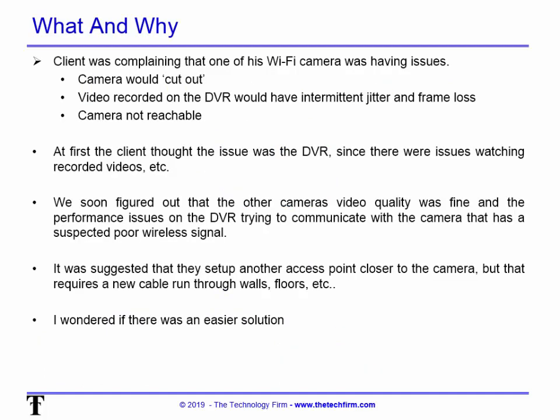The client was complaining that one of his Wi-Fi cameras was having issues — the camera would cut out, the video recorder on the DVR would have intermittent jitter and frame loss, and you could obviously see that in the video. Jitter and frame loss look slightly different, and it looked like both things were happening. Every once in a while the camera was also not reachable, and the DVR would complain about that. At first the client thought the issue was the DVR, since they were having issues watching recorded videos as well.